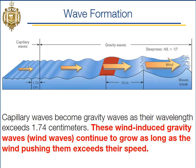As those waves grow — moving from left to right — we start out as capillary waves. As the wind continues to add energy into the water, those waves grow and become bigger, and the wavelength grows as well. And once they exceed 1.74 centimeters, they're no longer called capillary waves — they're called gravity waves.